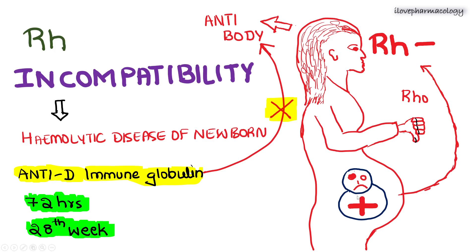In cases of Rh incompatibility — where the fetus is Rho-D positive and the mother is Rho-D negative — antibodies are produced against Rho-D in the maternal blood, which can cause hemolytic disease of the newborn. This can be prevented by giving anti-D or anti-Rho immune globulin within 72 hours following delivery or abortion, and also at the 28th week of pregnancy.